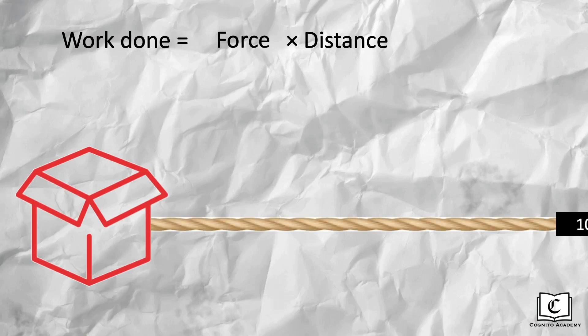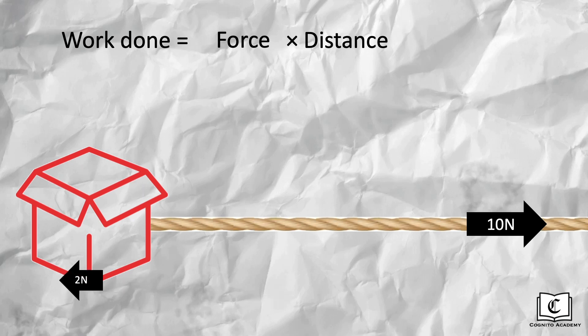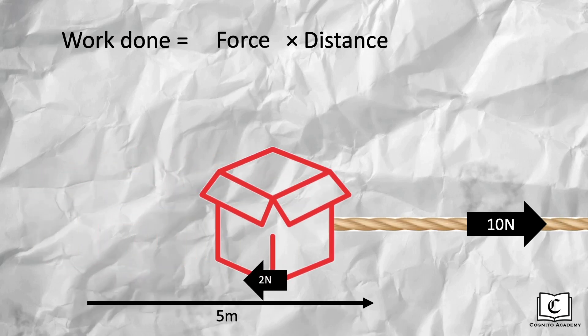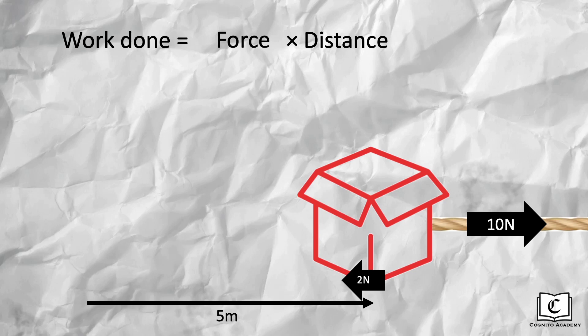In this scenario, a string pulls the box with a force of 10N to the right, but there is a frictional force of 2N. The box is pulled for a distance of 5 meters. So what is the work done by the string on the box? We know work done is force multiplied by distance, but here we have two forces, 10N and 2N. So which force do we use?